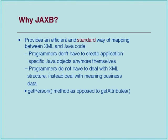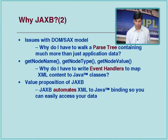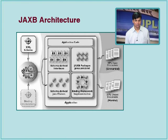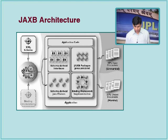This illustrates the issue with DOM and SAX: you have to parse a tree or write event handlers, which requires XML knowledge. JAXB automates the XML-to-Java binding and simplifies your work. The architecture is: you give an XML schema, JAXB creates interfaces and classes with default implementations. There is also a facility to customize binding — you can redirect your XML schema files to map to existing classes using binding declarations, rather than generating new ones.